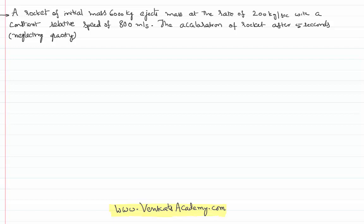The problem is like this: A rocket of initial mass 6000 kilograms ejects mass at the rate of 200 kilograms per second with a constant relative speed of 800 meters per second.